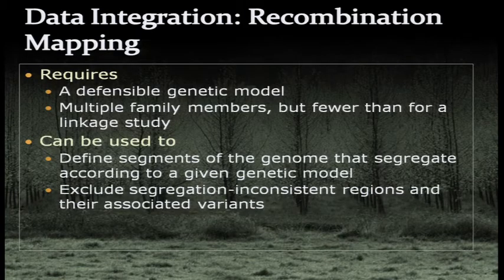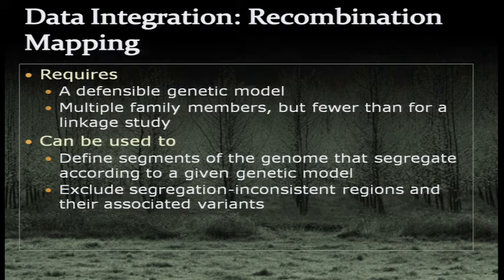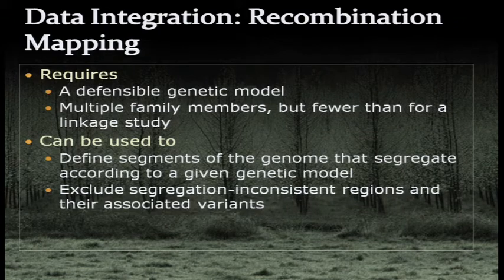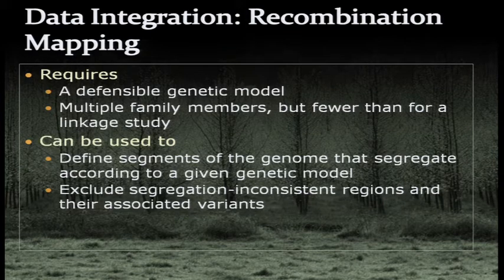Recombination mapping requires a defensible genetic model and multiple family members — though fewer than a formal linkage study. It can define genome segments that segregate according to a given genetic model and exclude variants in inconsistent regions to comprise a powerful filter.